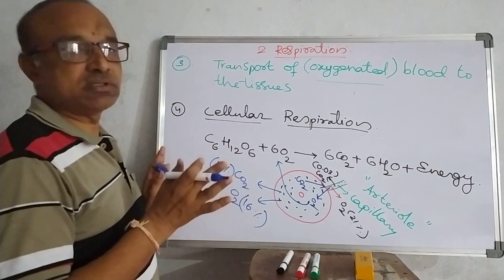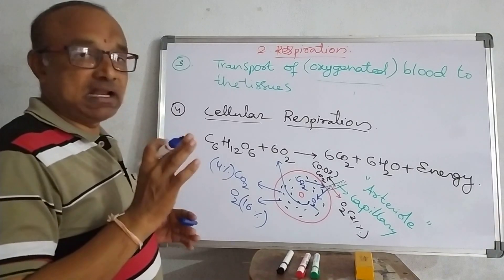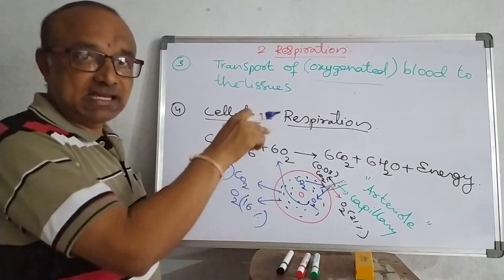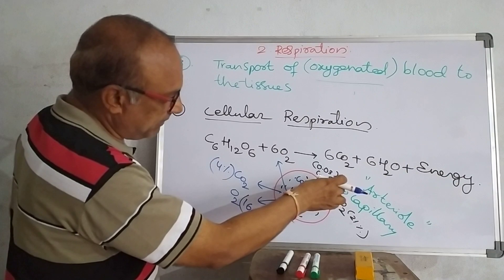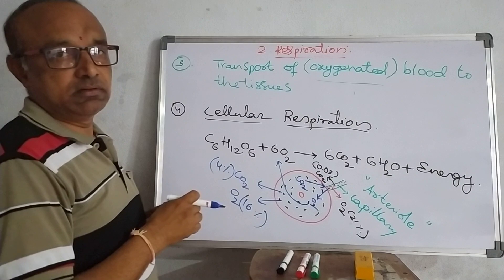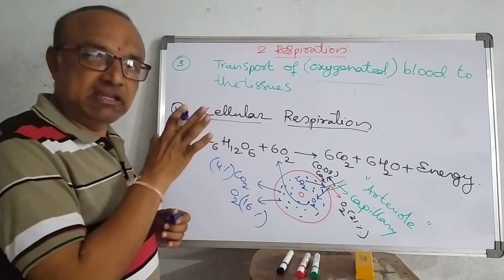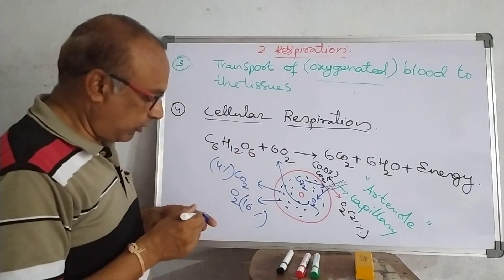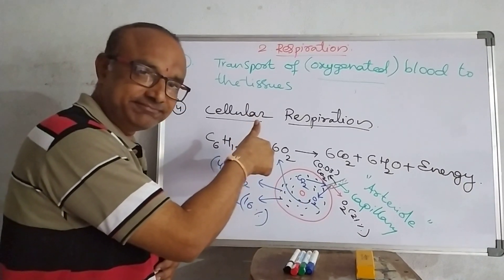This respiration process is cyclic and continuous — there is no gap, even as little as one-thousandth of a second. Carbon dioxide is always given out and oxygen is always received. In this way, there are four to five events we can observe in the process of respiration. I hope you understood clearly. Thank you one and all.